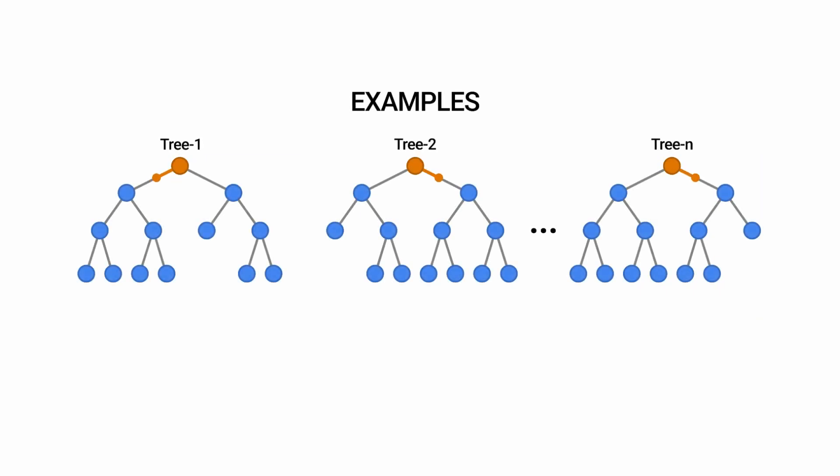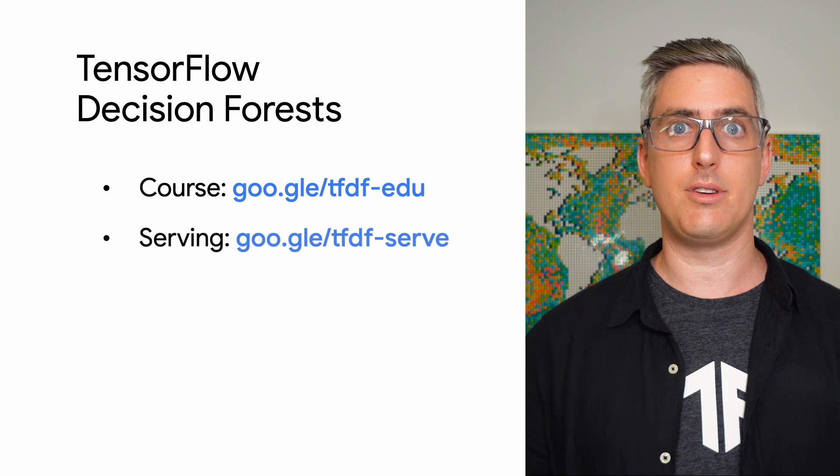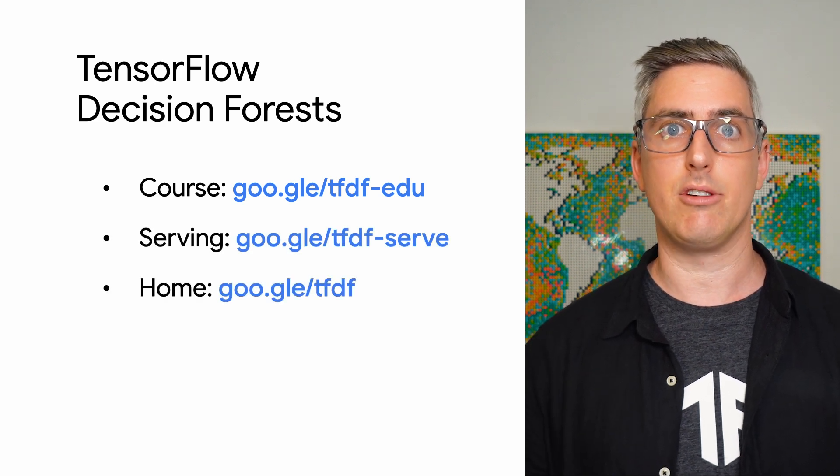Tree-based models are excellent when you're working with tabular data — they're fast to train, accurate, and interpretable. Our tree-based framework, TensorFlow Decision Forests, is now version 1.0. This milestone means that TensorFlow Decision Forests is mature, stable, and ready for production use. It also brings some new features, including native support for TensorFlow Serving, performance improvements, and a preview of inference APIs for JavaScript and Go. To learn more about TensorFlow Decision Forests, check out the links in the video description.